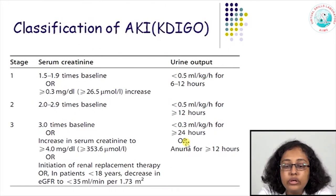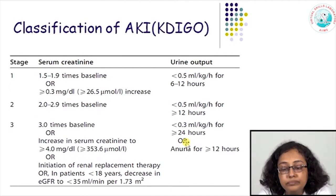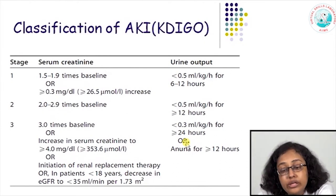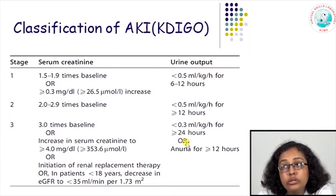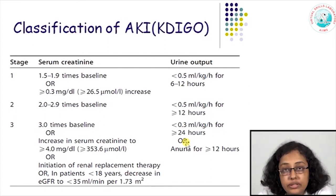KDIGO gave stages of kidney injury as Stage 1, 2, and 3, based on the type of rise in creatinine and the urine output. Stage 1 was the initial stage, while Stage 3 was the most severe, with a 3 times rise in serum creatinine, or the need for initiation of dialysis, with or without a decrease or persistent anuria in urine output.